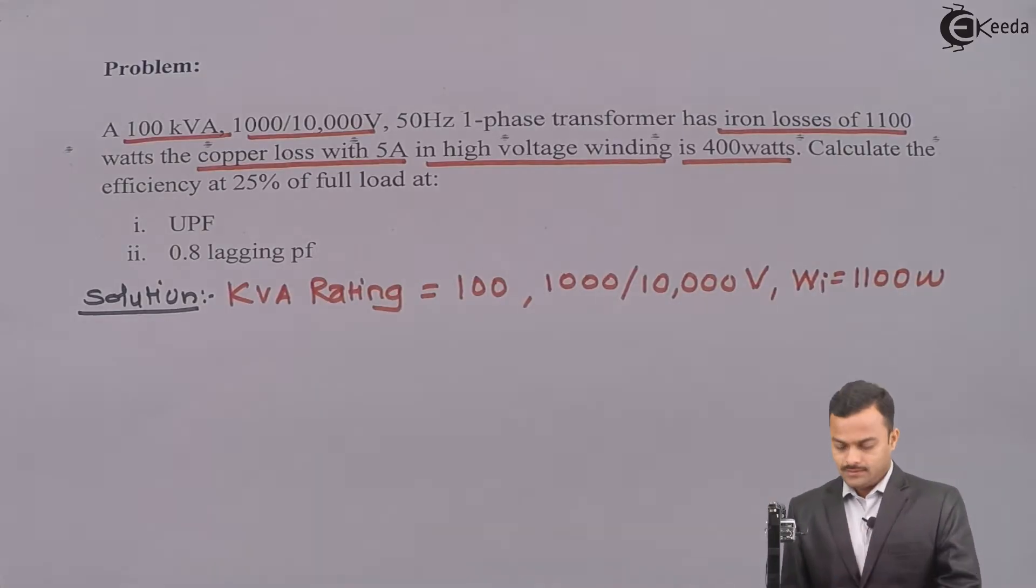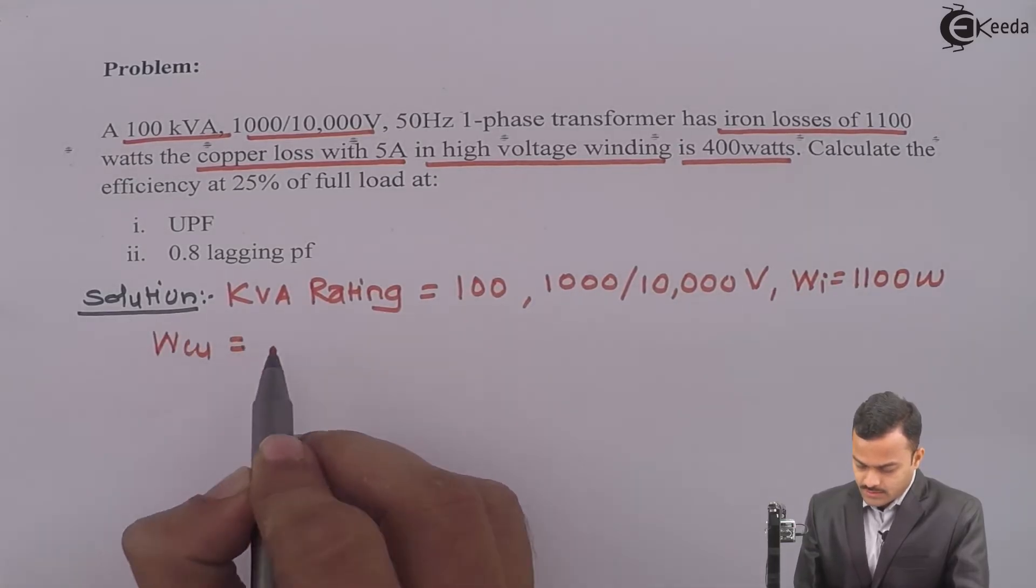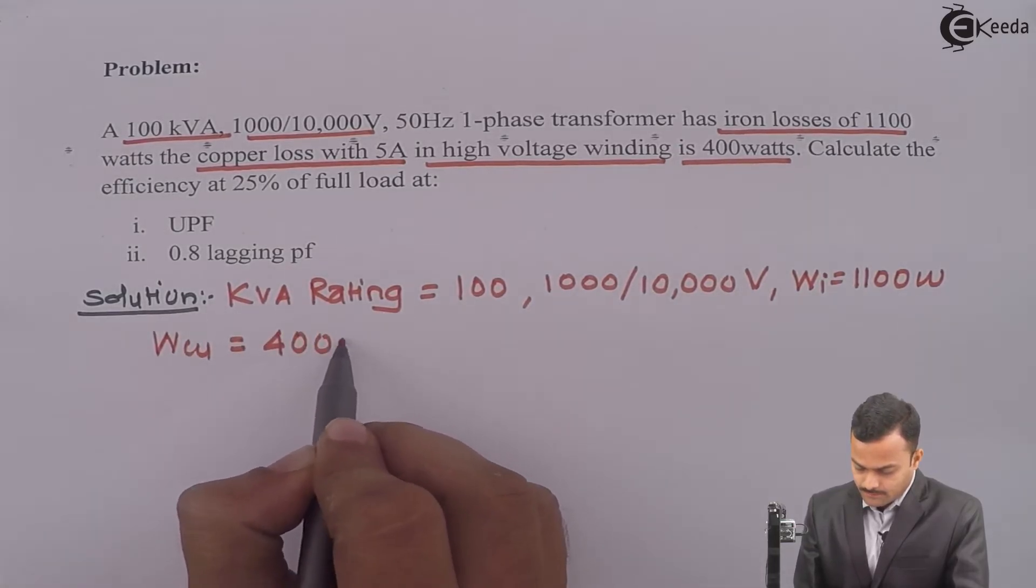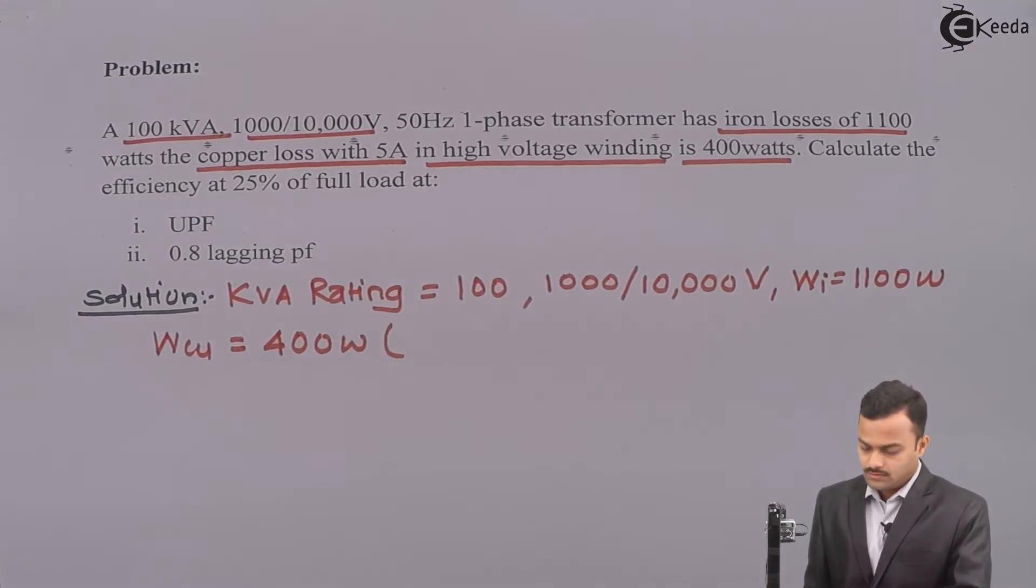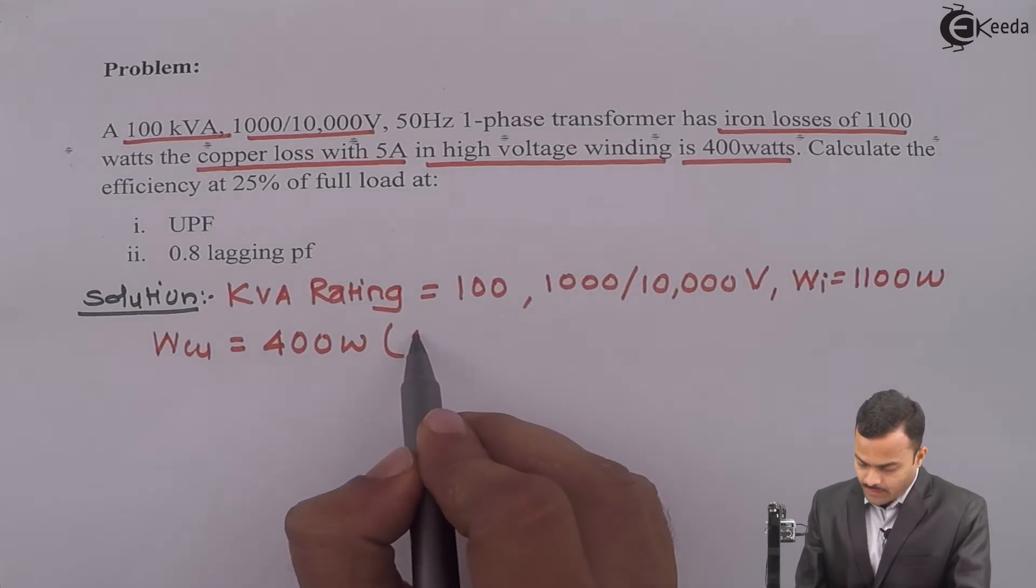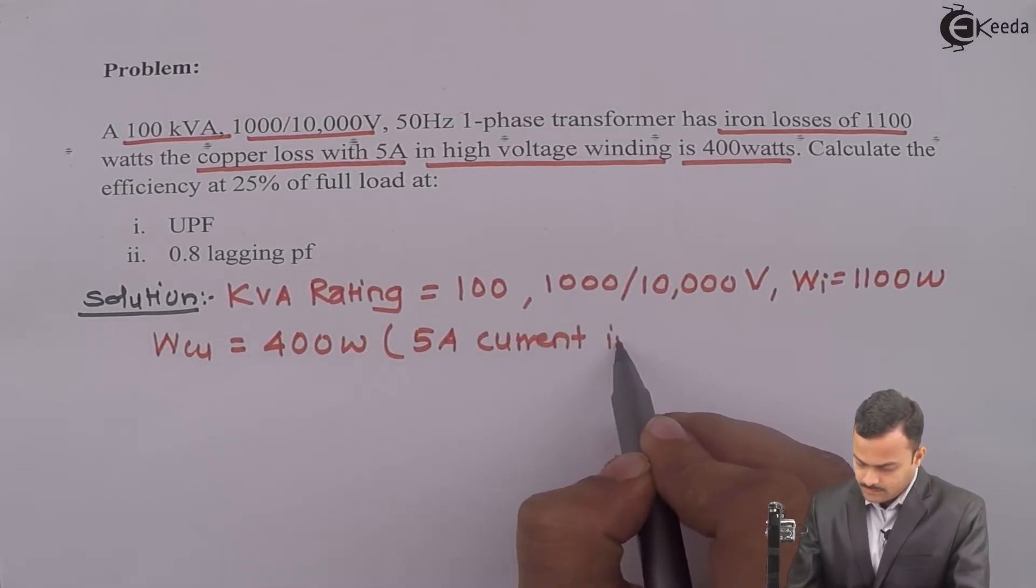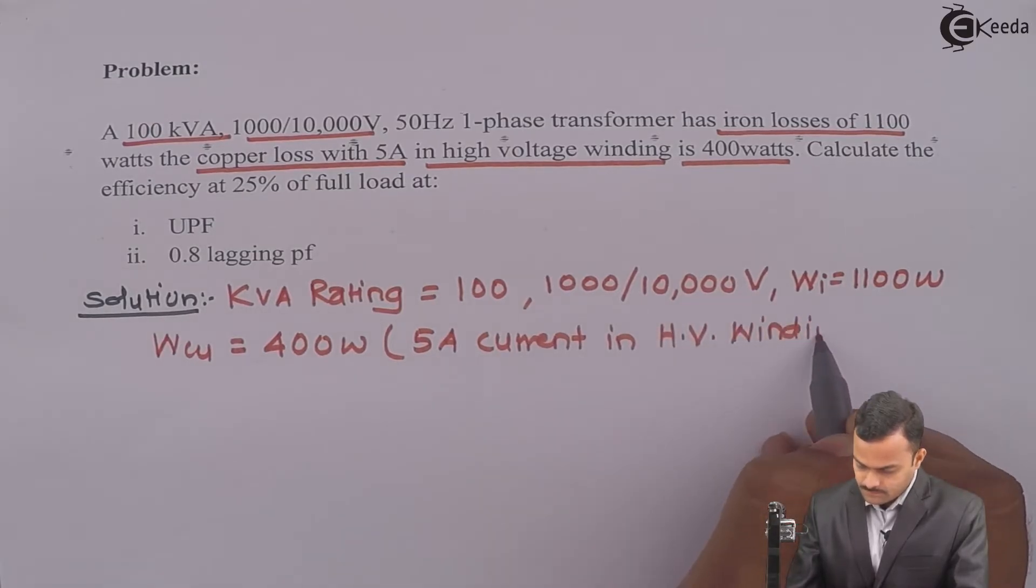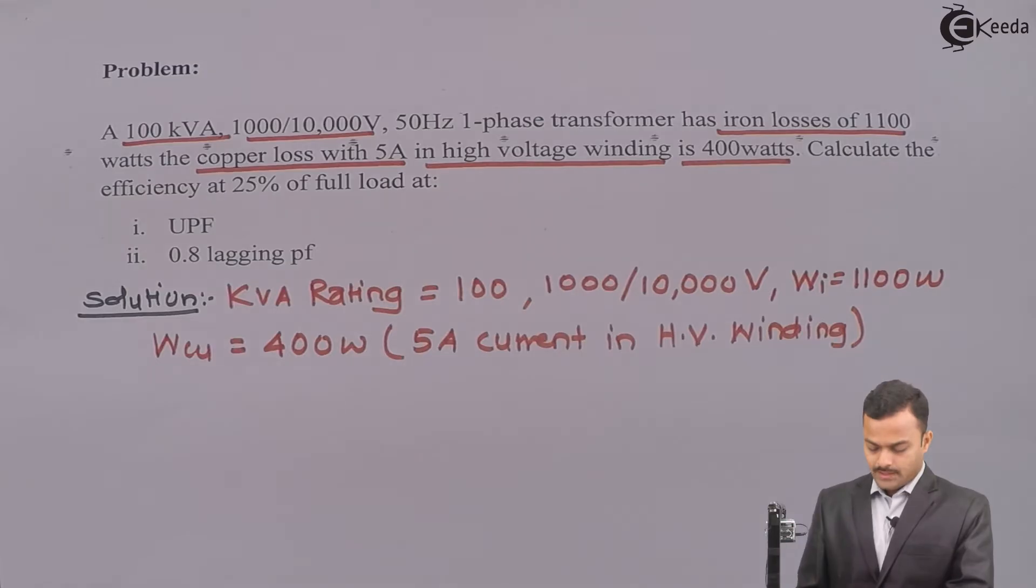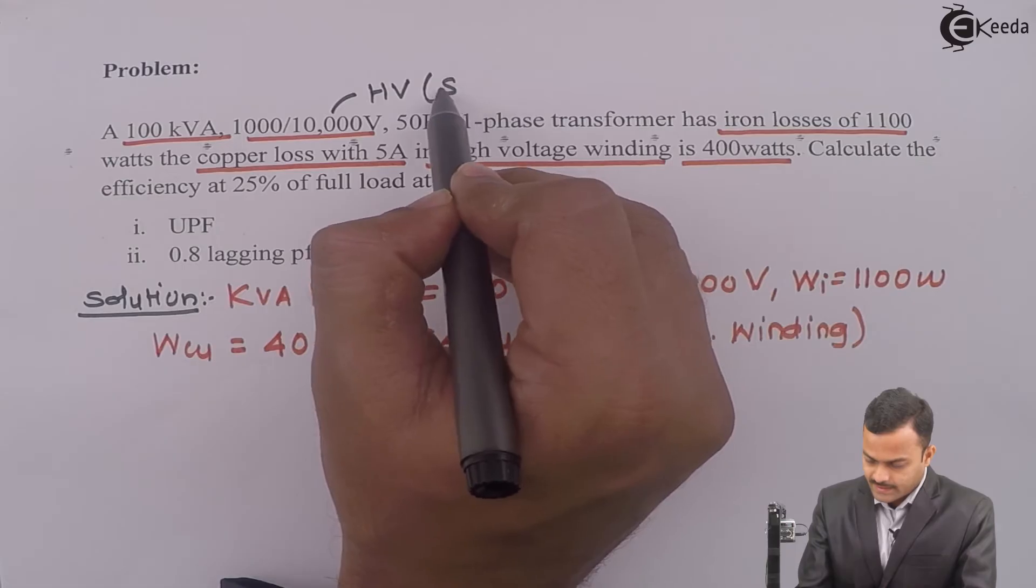Now this thing you have to understand properly. What they are saying, copper loss is given which is 400 watts but under some circumstances, what is that? 5 ampere current in high voltage winding. So if you see properly here, high voltage winding is this, which is secondary.